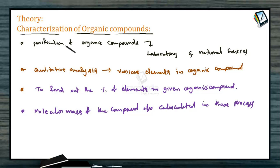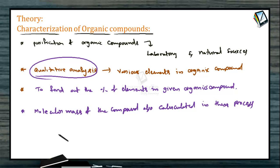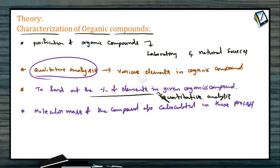First, you have to purify the compound. According to the nature of the compound, you will use various purification techniques. Then we will discuss what elements are present in the organic compound by qualitative analysis. After that, you have to find out the percentage of elements present by quantitative analysis. Finally, we will calculate the molecular formula of the compound. These are the various steps involved in the characterization of any organic compound in the laboratory.